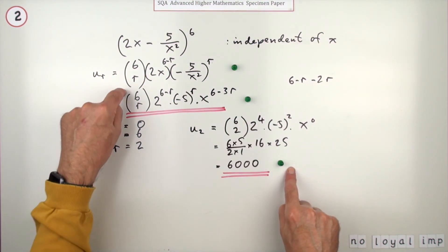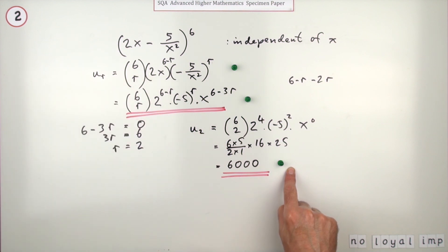And to get that six thousand from the general term according to the question—if you'd written all the terms out and identified six thousand, you'd only get this one mark out of the three.